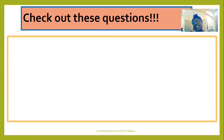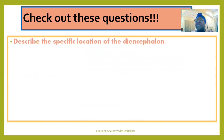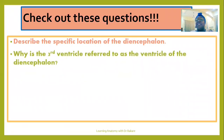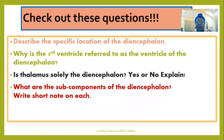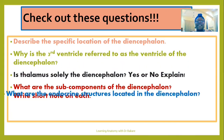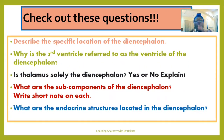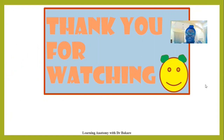We can check our understanding of this lecture through the following questions: Describe the specific location of the diencephalon. Why is the third ventricle referred to as the ventricle of the diencephalon? Is the thalamus solely the diencephalon — justify your answer. What are the subcomponents of the diencephalon? Write short notes on each. And lastly, what are the endocrine structures located in the diencephalon? Thanks for watching this video — let's meet again.